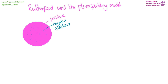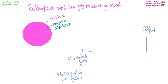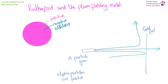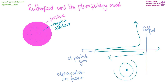Rutherford wanted to test the plum pudding model, which was a large positive block with negative bits dotted throughout it. He took a sheet of gold foil and a gun that fired alpha particles, and shot them at the sheet of gold foil. The majority of these particles went straight through, but very occasionally one would get deflected a little bit, and even more occasionally, one would get deflected a lot. This told Rutherford that instead of an evenly distributed pattern of negative and positive charges, there is likely a build-up of positive charge in the middle, with negative charges around the outside, and the majority of the atom was made up of empty space — leading to the development of the nuclear model of the atom.